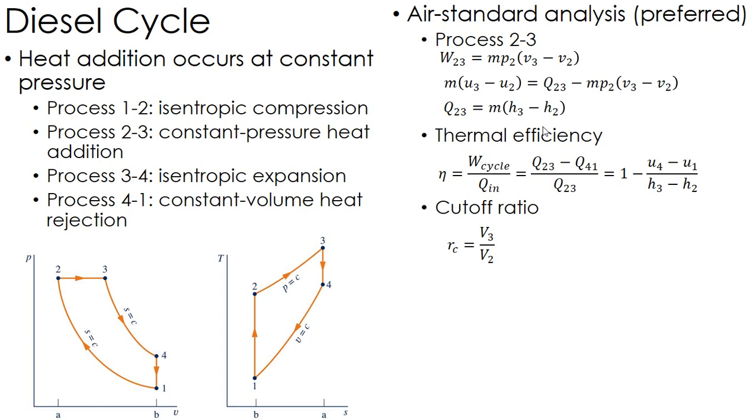Now because I have that change in volume, process 3 to 4 is going to look a little bit different. That's my other isentropic expansion as far as how I calculate and set state 4. So again, because it's isentropic, I use the relative pressure ratio 4 over 3.